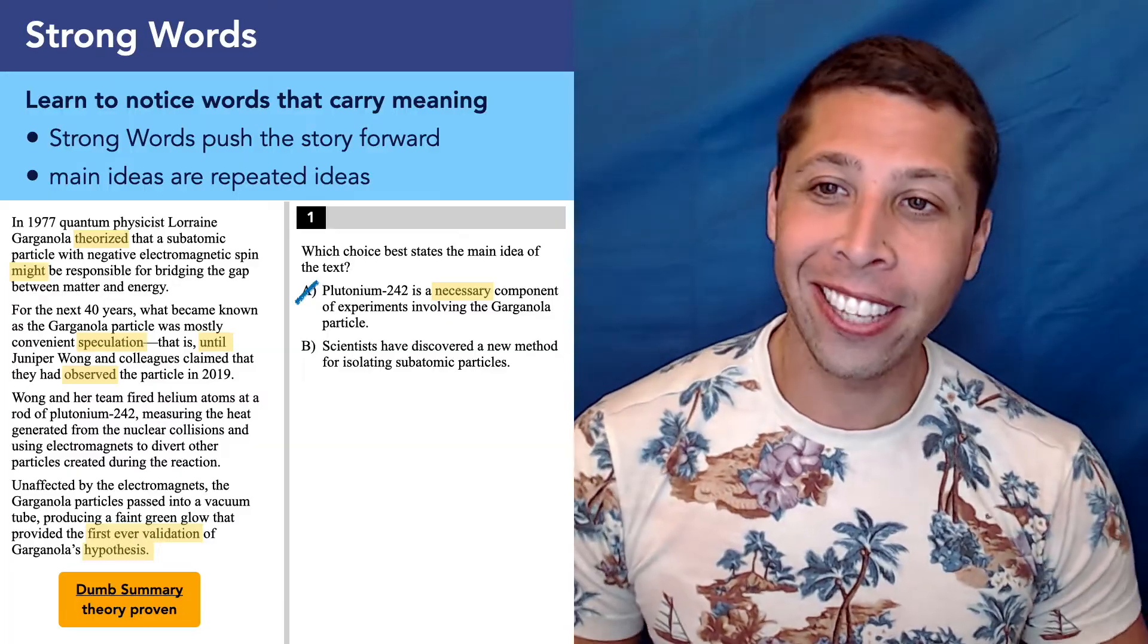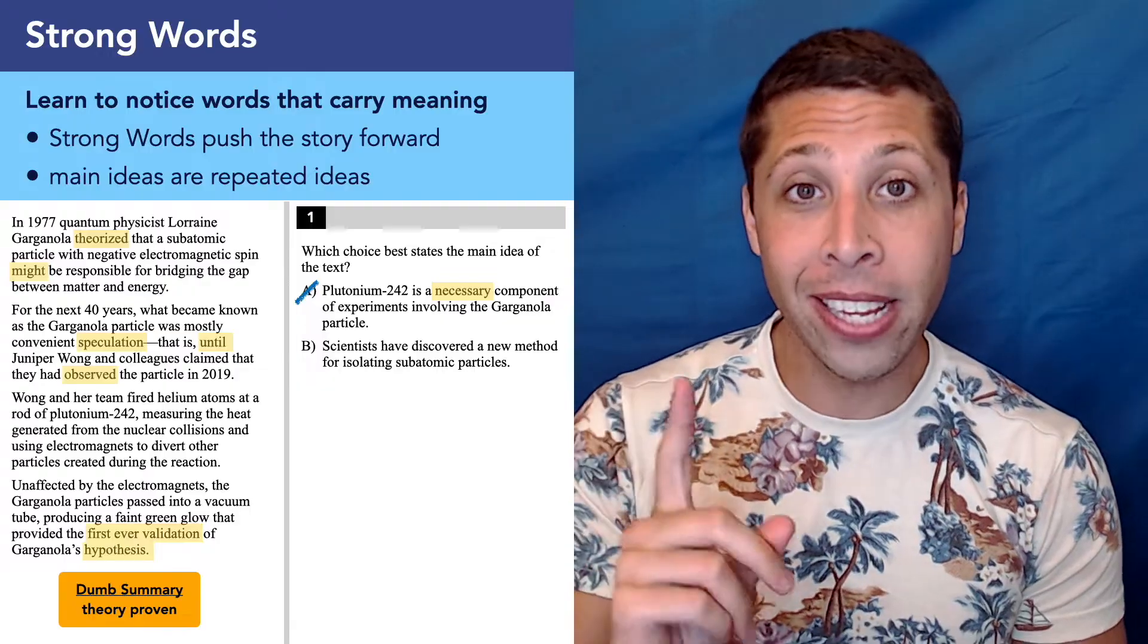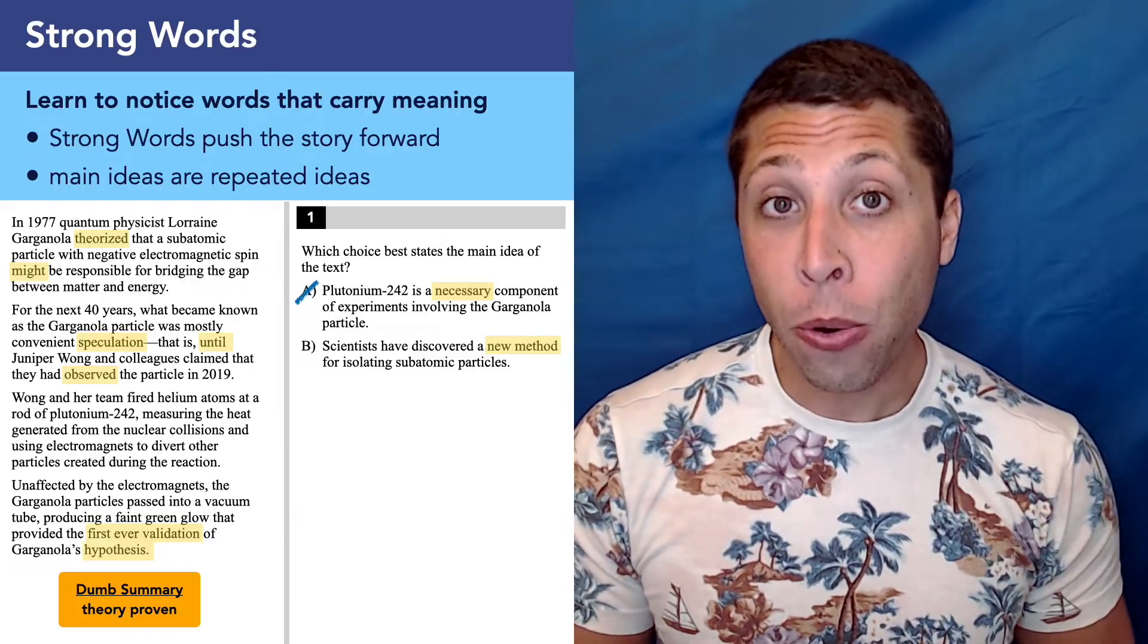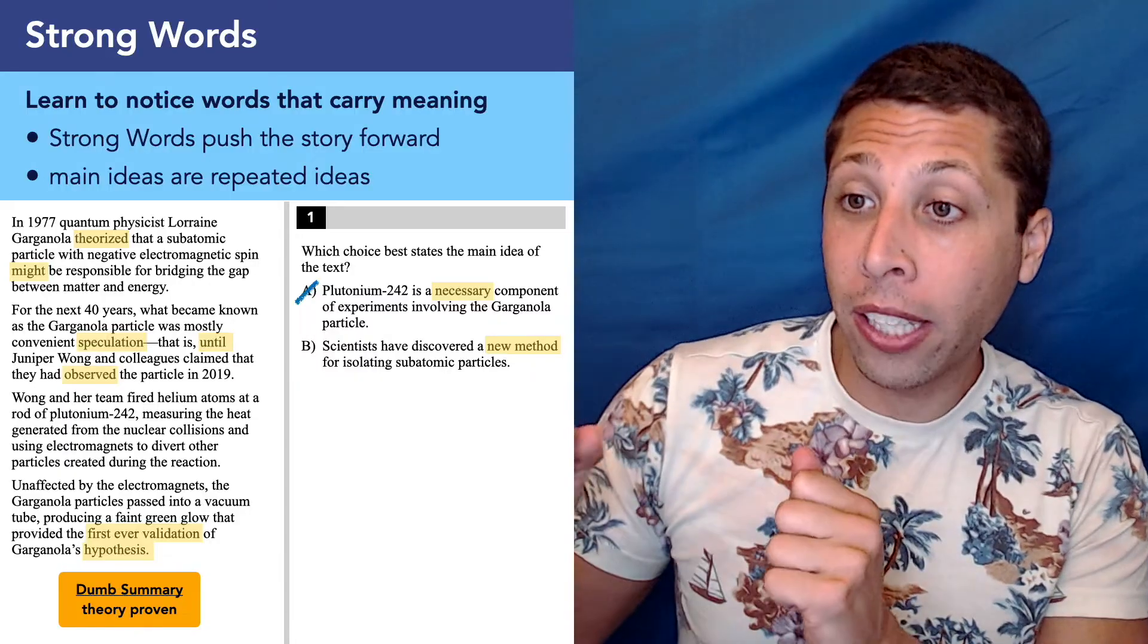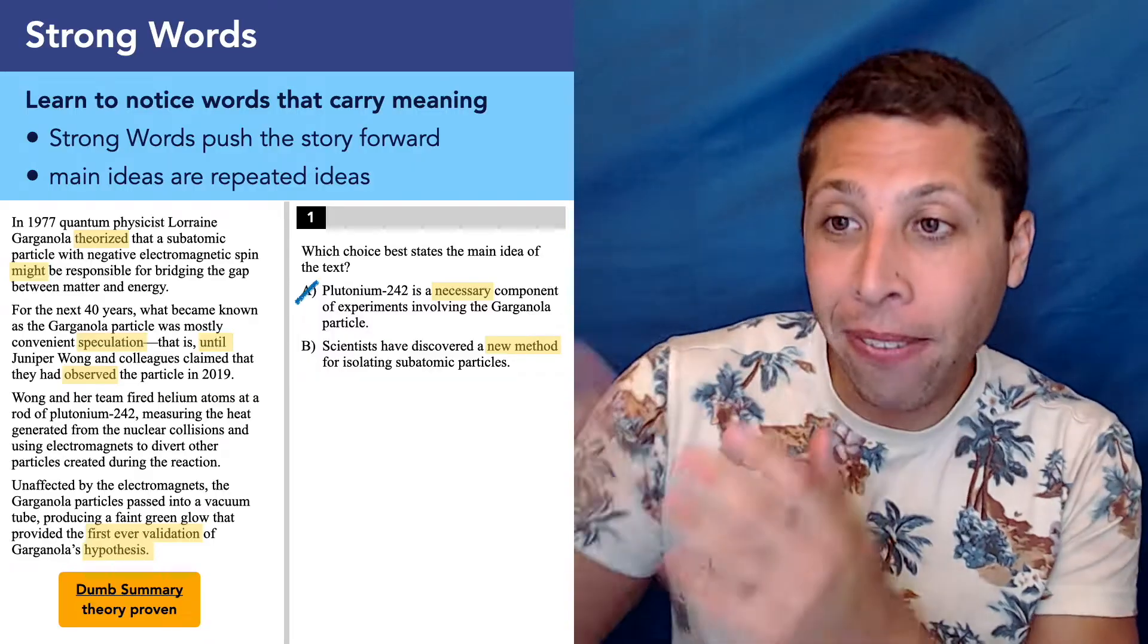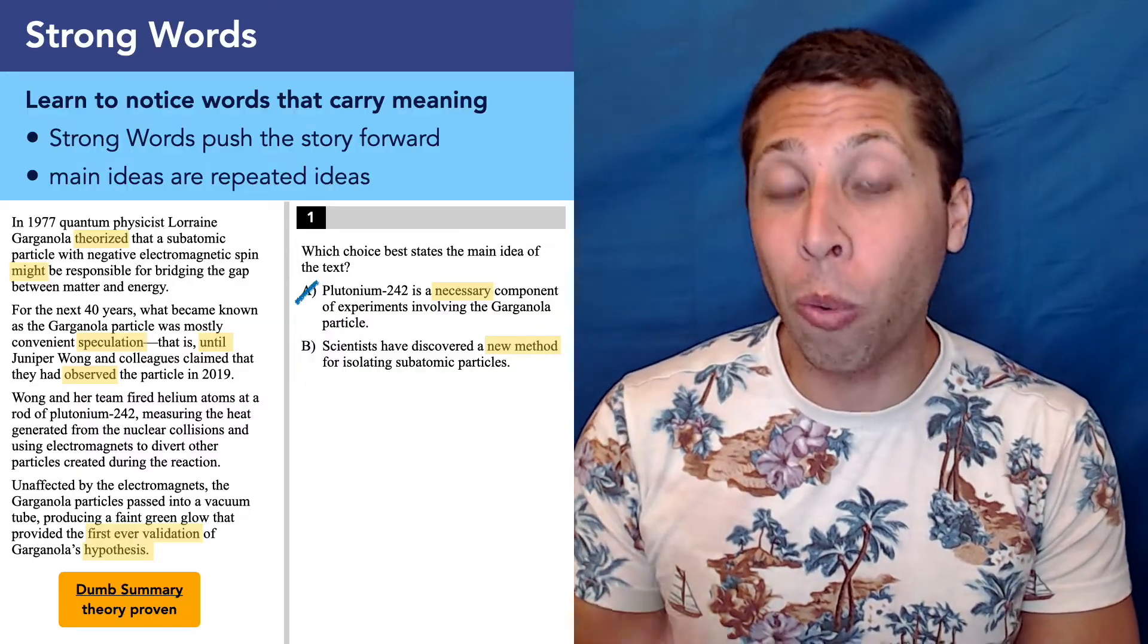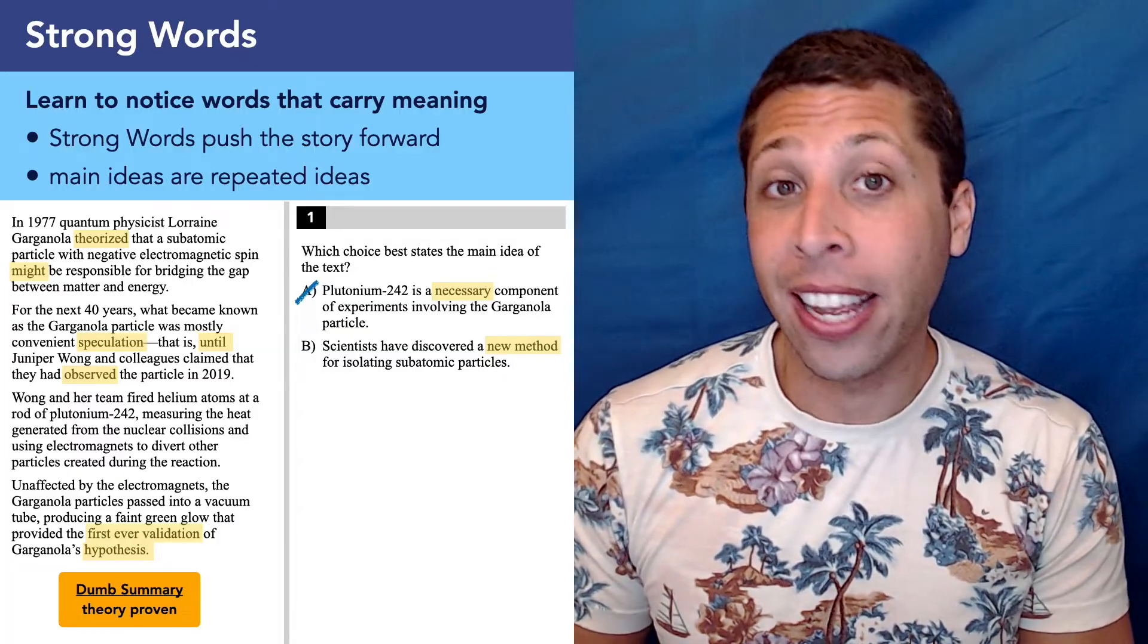In the next episode, I'm going to talk about trap answer choices, which often involve strong words that we don't, at first glance, think of as strong. The idea of necessity, of requirement, this is a very common trap answer on the SAT. For now, let's look at B. Scientists have discovered a new method for isolating subatomic particles. Maybe that's true. If it is, then they need to specifically say that this was a new method. They definitely describe the method of firing the helium at the plutonium, but did they say that it's new? No. There's no word that copies that idea. That word new is a very strong word, and we are not allowed to just assume that it's new. The passage in some way needs to say it, and it does not.